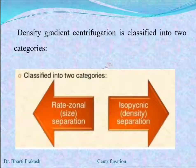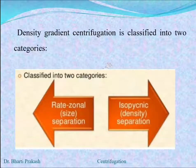Density gradient centrifugation is classified into two categories: rate zonal, which is dependent upon the size and is known as size separation, and isopicnic separation, which is dependent upon the density and is therefore called density separation.